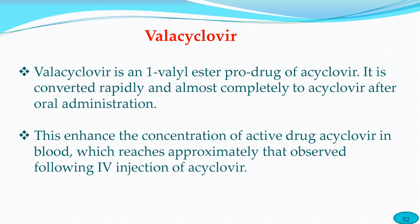Apart from acyclovir, valacyclovir is a valyl ester prodrug of the same class. Most properties are very similar to acyclovir, but valacyclovir is rapidly and almost completely converted to acyclovir in the body.